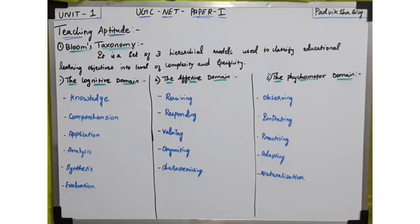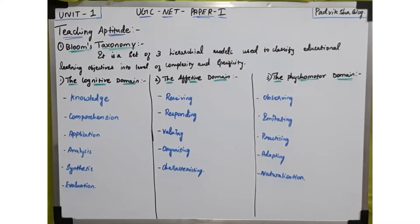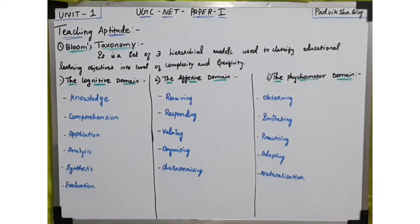The first domain is the cognitive domain. The cognitive domain involves the development of our mental skills and the acquisition of knowledge. In the cognitive domain, we develop our mental skills and acquire knowledge.